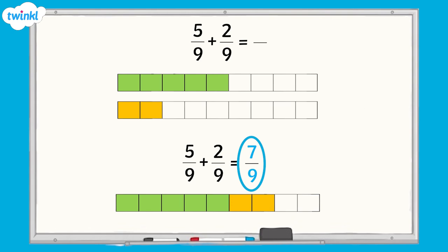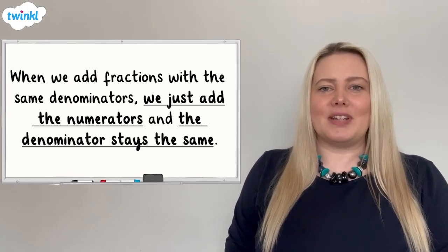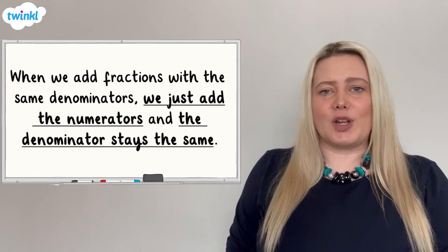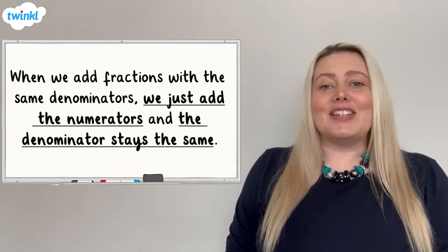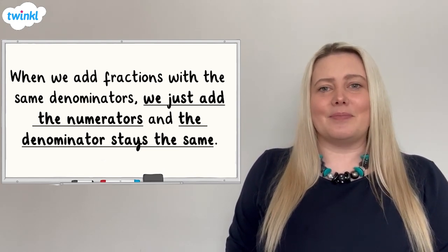Five add two equals seven. When we add fractions with the same denominator, we just add the numerators and the denominator stays the same.